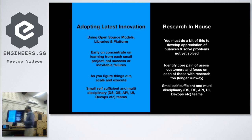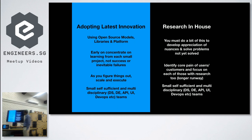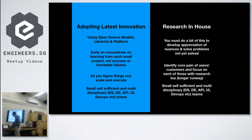The quick wins in data science execution come from using open source models, libraries, and platforms. When you use these you can quickly reduce the cost of adopting data science and get results faster rather than building everything from scratch. Some problems are not yet solved in these libraries, which is why you still need research — and research gives you a better understanding of the nuances of data science. You should have a self-sufficient multi-disciplinary team: data scientists, data engineers, API developers, UI people — all in a small team.